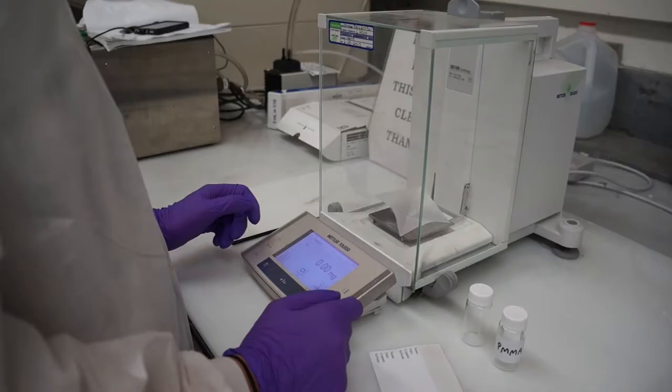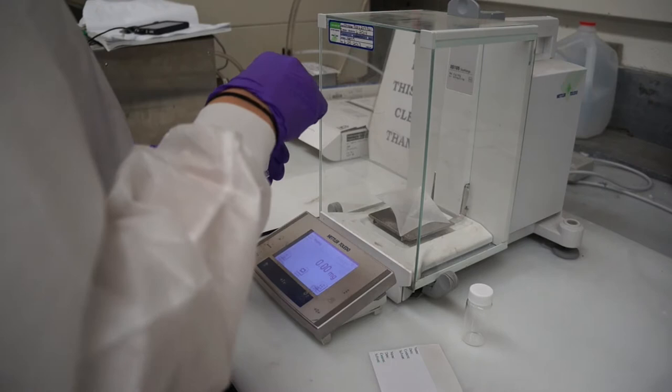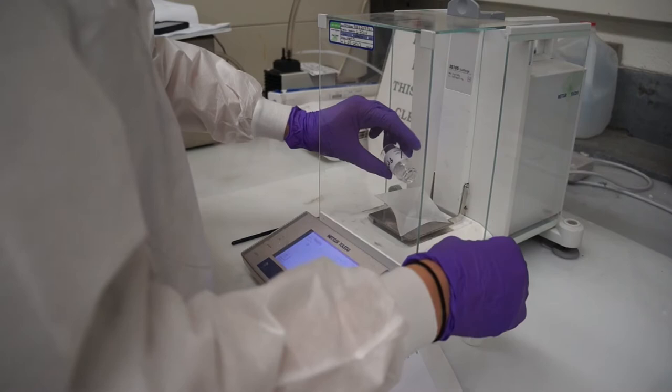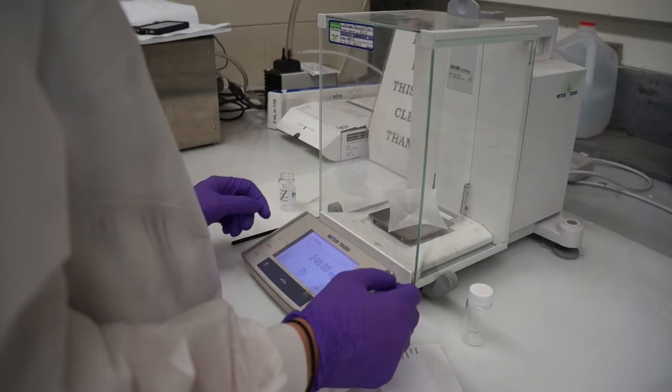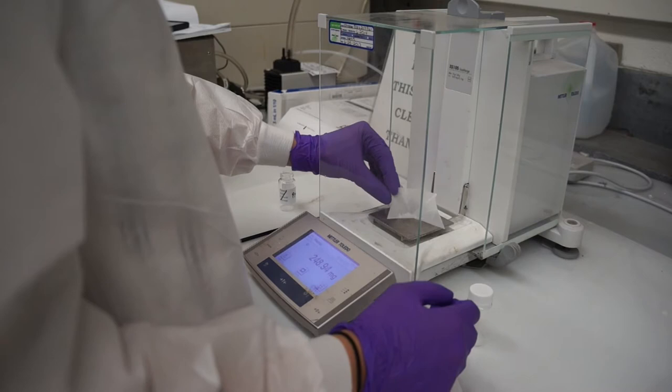You're going to be weighing out 300 milligrams of PMMA. Make sure to close the doors of the scales for more precise measurements. The reason we're doing this is because 20 milliliters of volume fits comfortably in a scintillation vial, and we're looking for a 15 milligram per milliliter solution of PMMA in toluene.